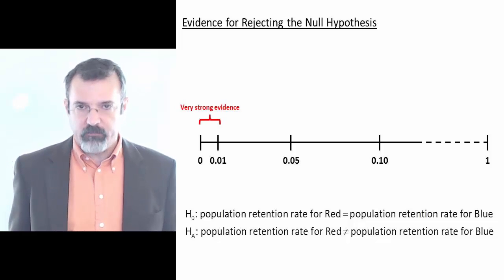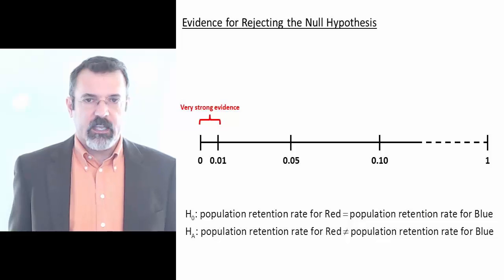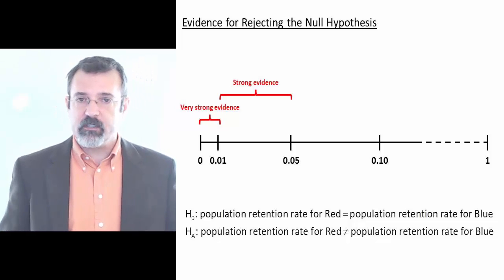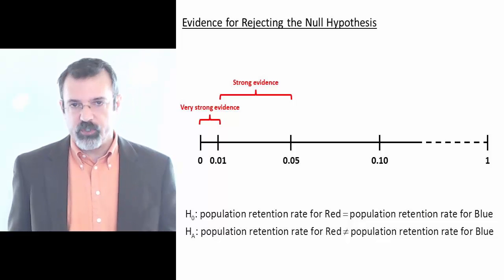we say that we have very strong evidence to reject the null hypothesis. If our p-value is between 0.01 and 0.05, we say that we have strong evidence to reject the null hypothesis.